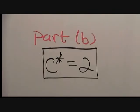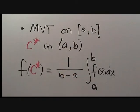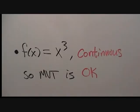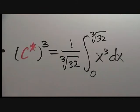Let's do a quick recap. The mean value theorem for integrals applied to an interval ab says: there will be a number c star in the open interval ab such that f of c star equals 1 over b minus a times the integral from a to b of f of x dx. Remember, b minus a is the length of the interval. Also remember, this requires f to be continuous. Our function is f of x equals x cubed, which is continuous because it's a polynomial. So the mean value theorem is okay for this problem. The mean value theorem says there will be a number c star such that c star cubed equals 1 over the cube root of 32 times the integral from 0 to the cube root of 32 of x cubed dx.